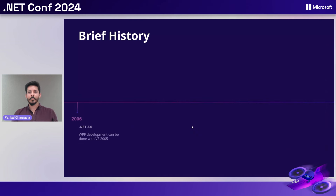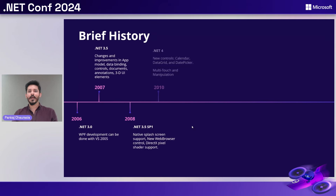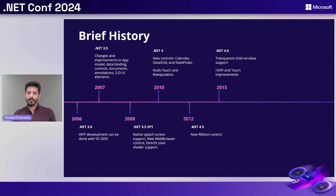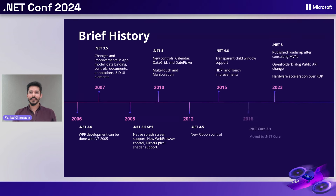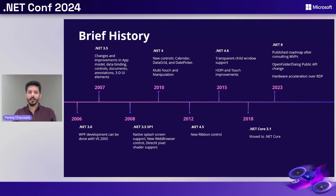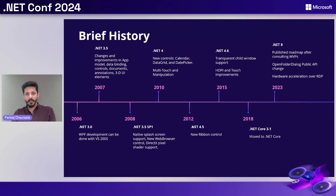WPF has been around for 15-plus years. Let's take a look at the brief history of how WPF has evolved. WPF started its journey in 2006, where it was launched with .NET Framework 3.0 and Visual Studio 2005. Over the years it received multiple updates and improvements on data binding, documents, splash screen, and web browsers. Newer controls were added in .NET 4 and later, like calendar and date picker. Right up to 2015, in .NET 4.6, transparent window support and touch improvements were also added.